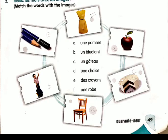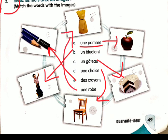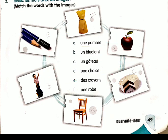Now we will do exercise number two — match the columns. Pomme means apple, étudiant means student, gâteau means cake, chaise means chair, crayon means pencil, and robe means dress.